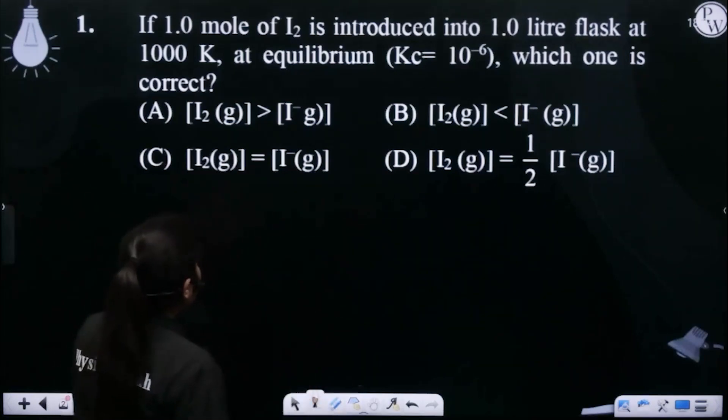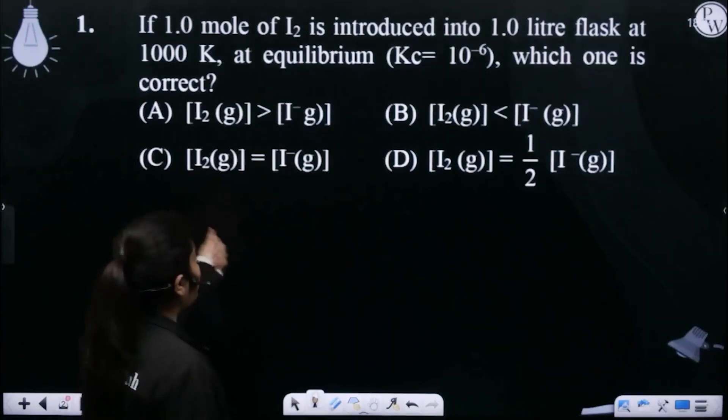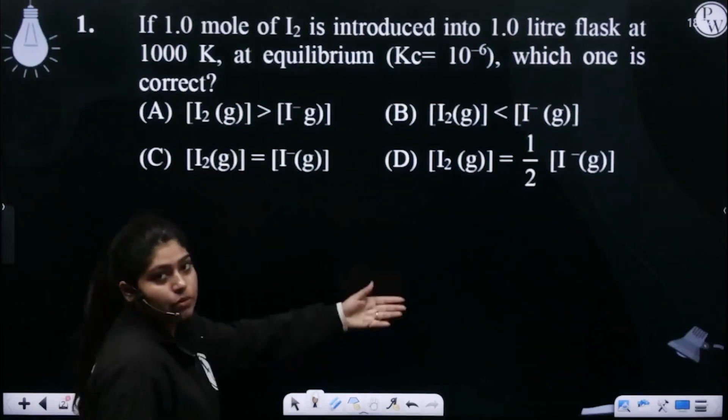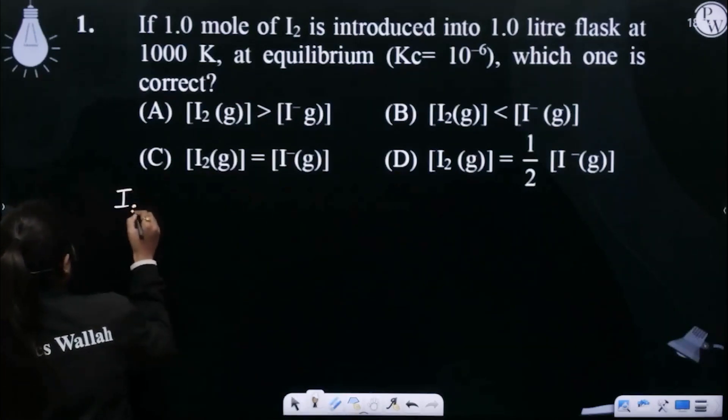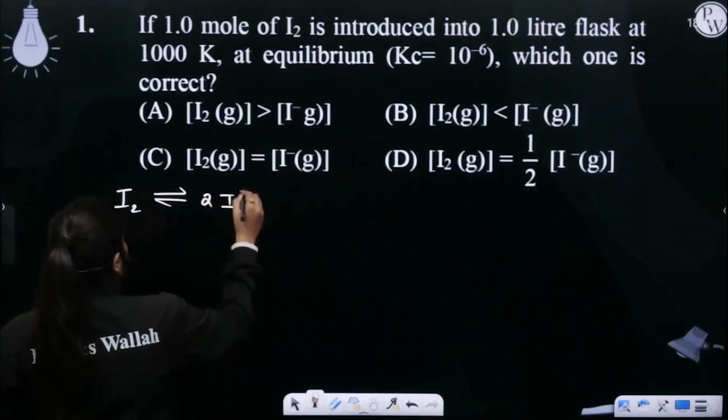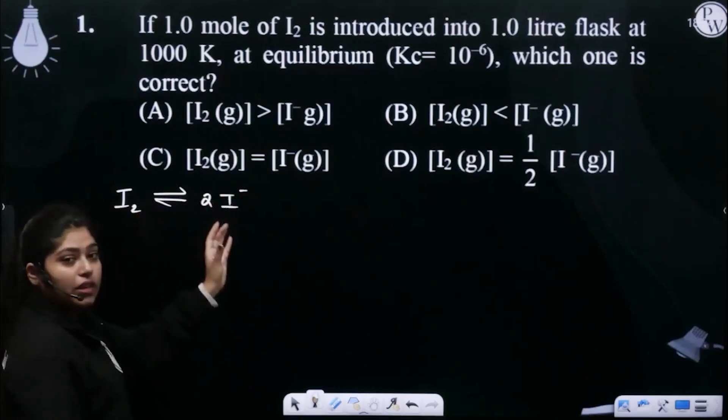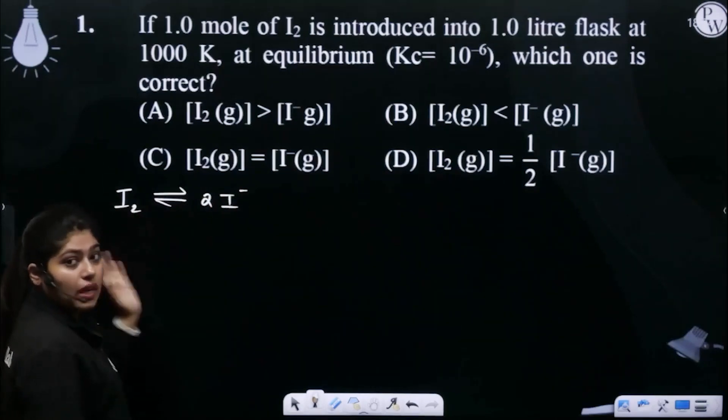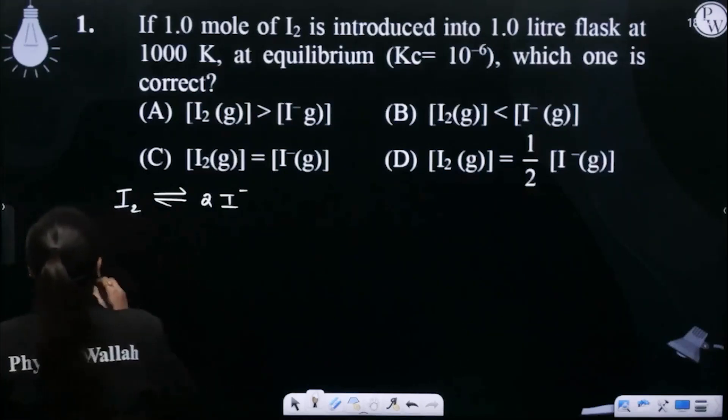So now we are asking, will I2 concentration be more or will I minus be more? So the reaction says that I2 changes into I minus. In both of them equilibrium will be established. Forward reaction is also going forward, backward will be coming from the same speed, that is why equilibrium is established.